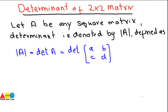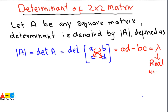Now we see how you can find the determinant of a 2×2 matrix. You can find its determinant by cross-multiplying the elements. You write a×d, which is 'ad', and the sign between them will be minus, giving you ad minus bc. This gives you a real number, that is, lambda.